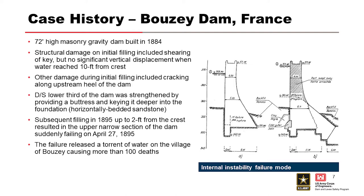There are case histories here. The Boise dam in France — long story short, there was leakage noted when they started filling the reservoir. They reinforced it and tried to make repairs. When they filled it again, the top half of the dam snapped off. That's an example of an internal failure mode.